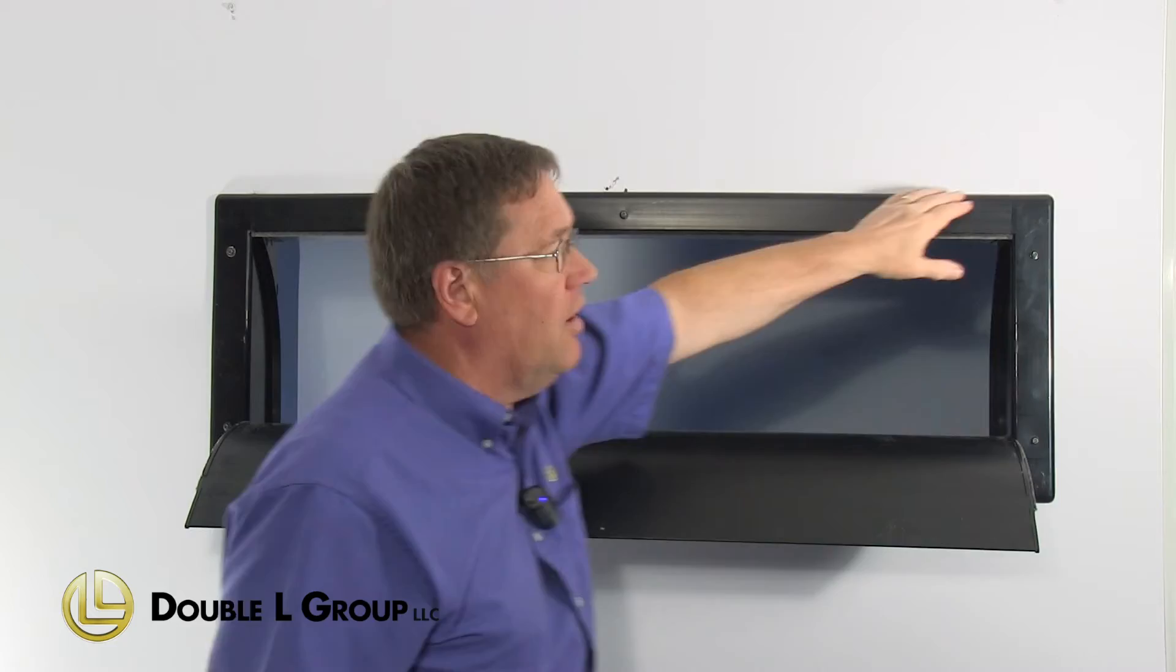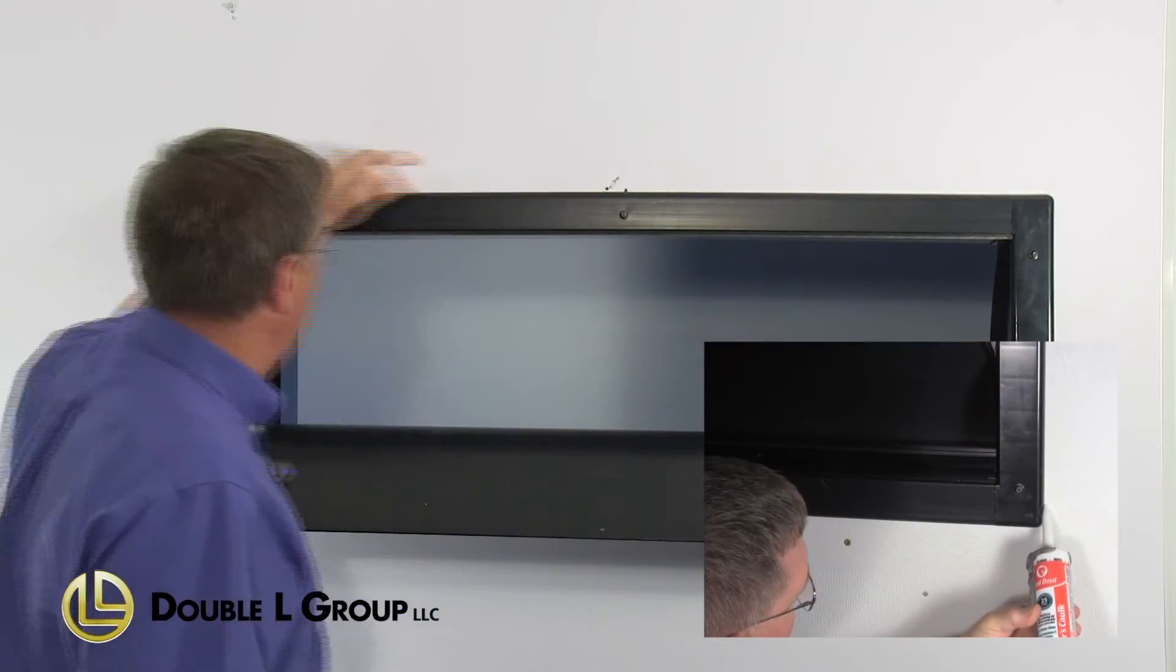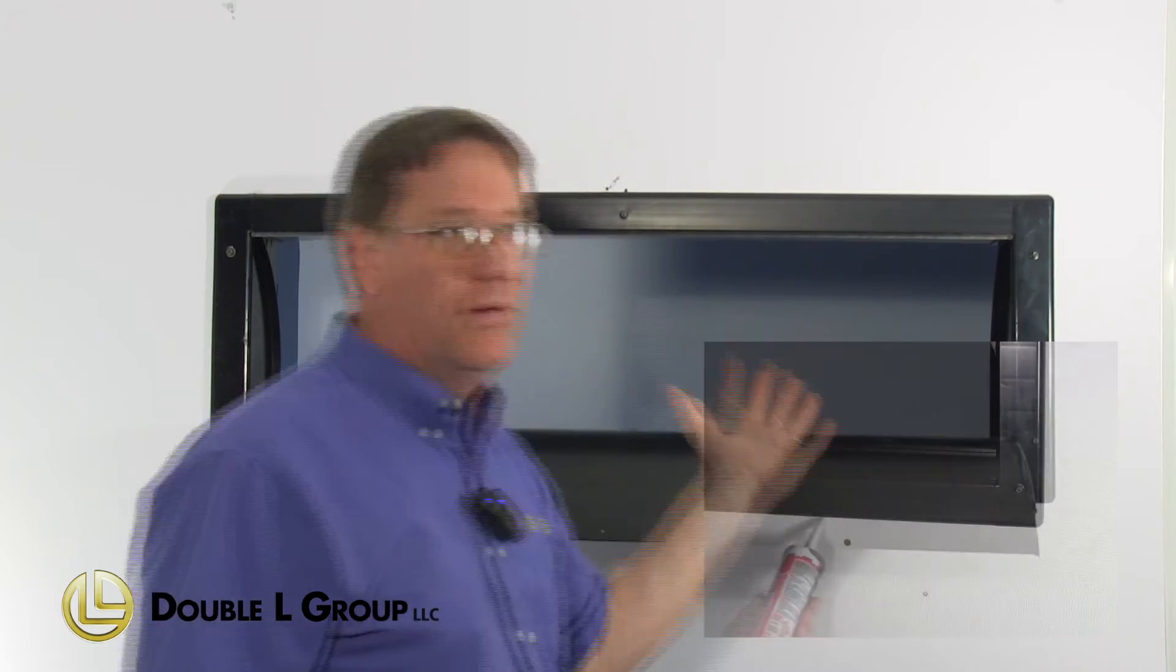Now that we've got it all installed, you would need to take a caulking gun and caulk all the way around the perimeter of this inlet. You should have it sealed up so you'll get the proper airflow and get it all coming through the inlets without any leakage on the sides.